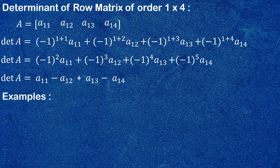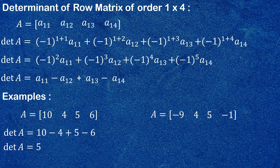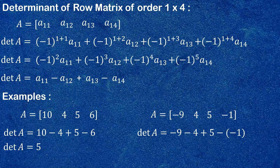Let's take an example: A = [10, 4, 5, 6]. This is a 1×4 matrix. Its determinant is 10 − 4 + 5 − 6 = 5. Let's take another example: A = [−9, 4, 5, −1]. Evaluating according to the discussed definition, det(A) = −9 − 4 + 5 − (−1) = −7.